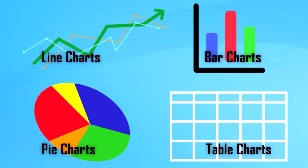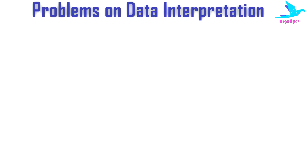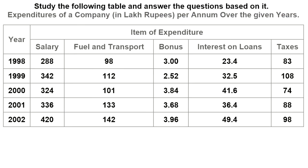The different types of data charts used for data interpretation are table charts, pie charts, bar charts, and line charts. First, let's see the illustration of a table chart.